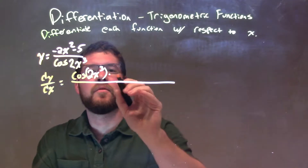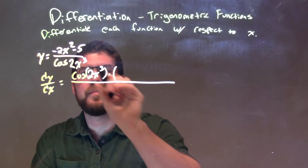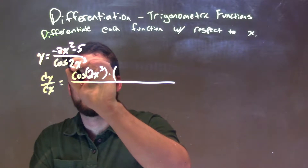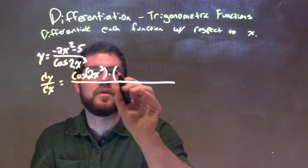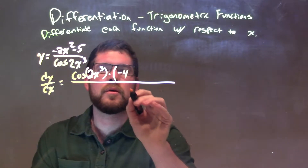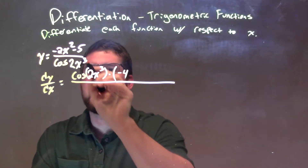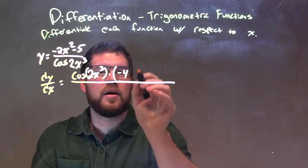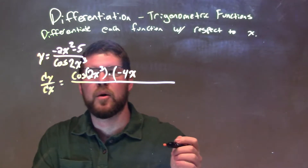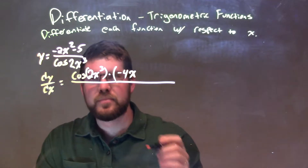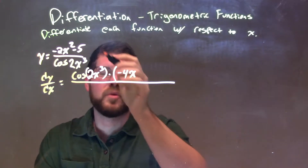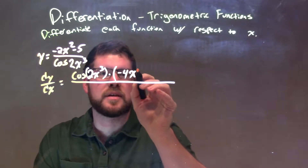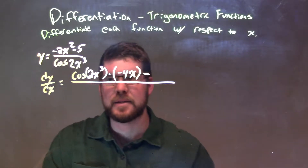The derivative of the numerator: we're using the power rule here. The 2 comes down to the negative 2 out front, so we have negative 4. We keep the x, the x exponent goes down by 1, and the derivative of negative 5 is 0.